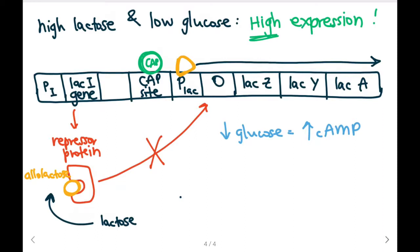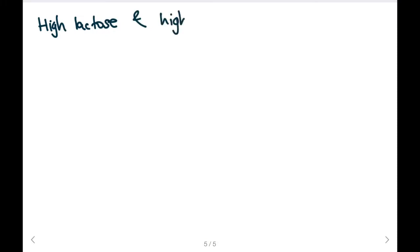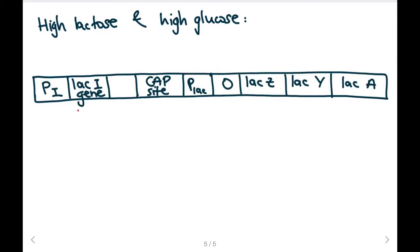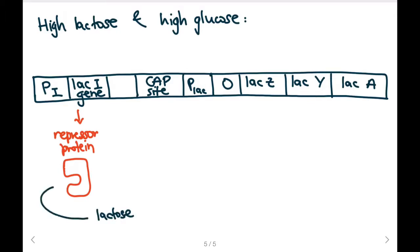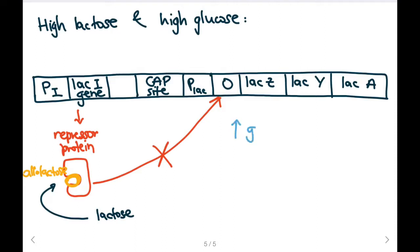Another possible scenario is having high lactose levels and high glucose levels. If this is our DNA sequence, our repressor protein will be produced because our lacI gene is functional. But because there's high levels of lactose, allolactose will bind to the repressor protein, and as a result, it will change the shape of our repressor protein so that our protein cannot bind to our operator. High levels of glucose will correlate to low levels of cyclic AMP, and cyclic AMP will not bind to our CAP molecule, so our CAP molecule will not bind to our CAP site.